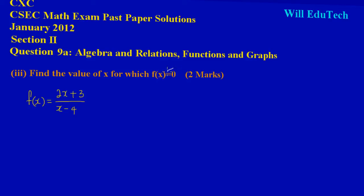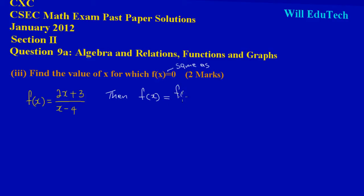Now if you note in math, the equal sign means 'same as'. So it simply means the exact thing that is on the left hand side is the same thing that's on the right hand side. So if they are asking us to find the value of x for which f of x is equal to 0, we can simply say f of x is equal to f of x and that would make the equation true.